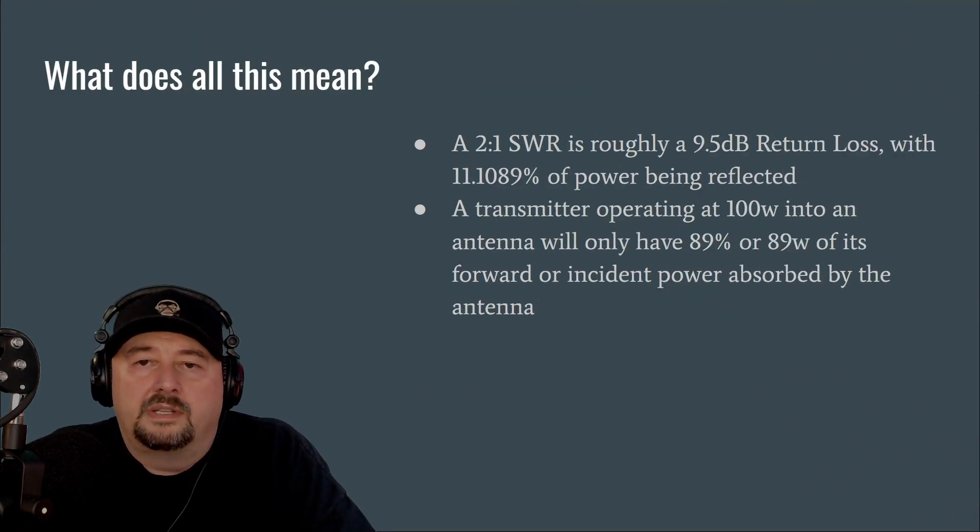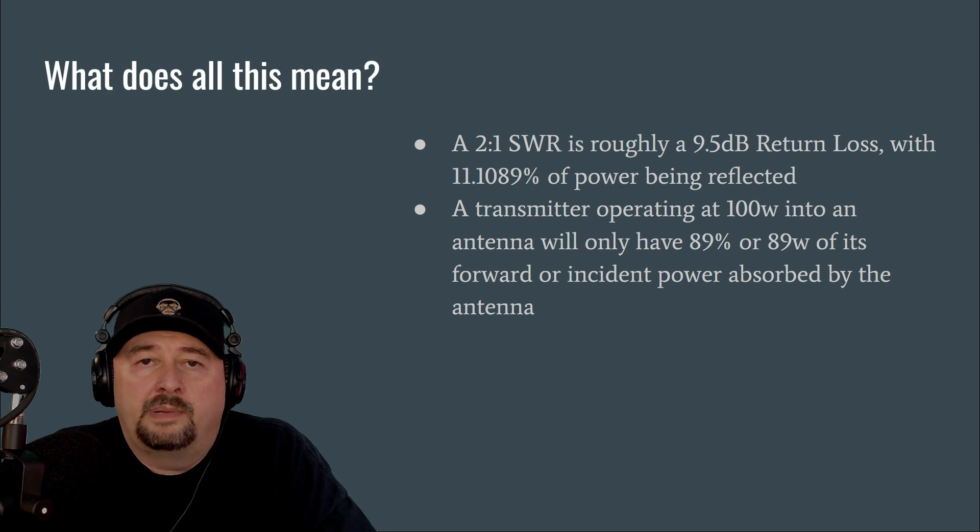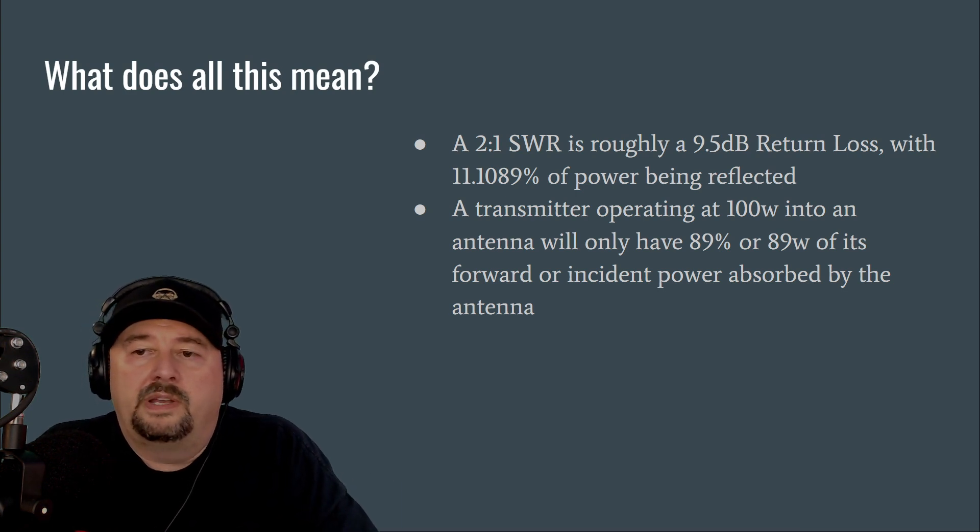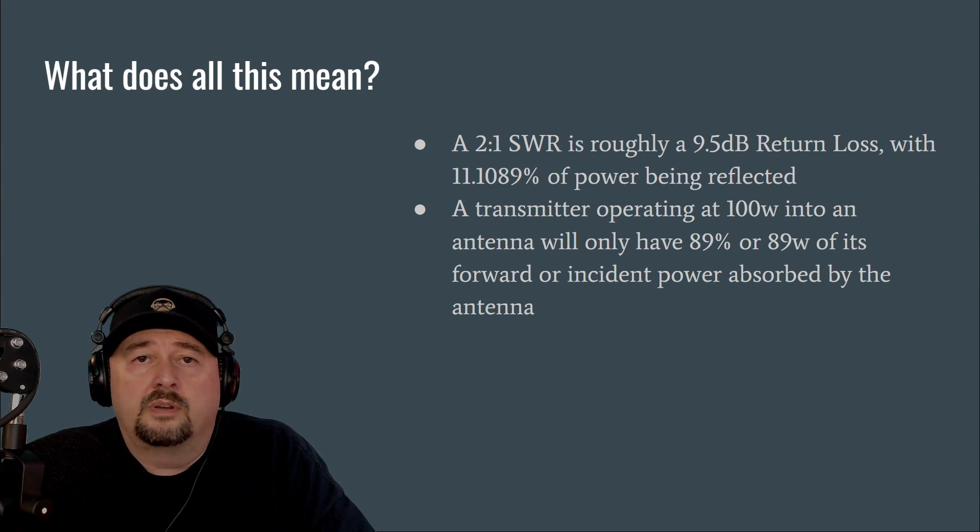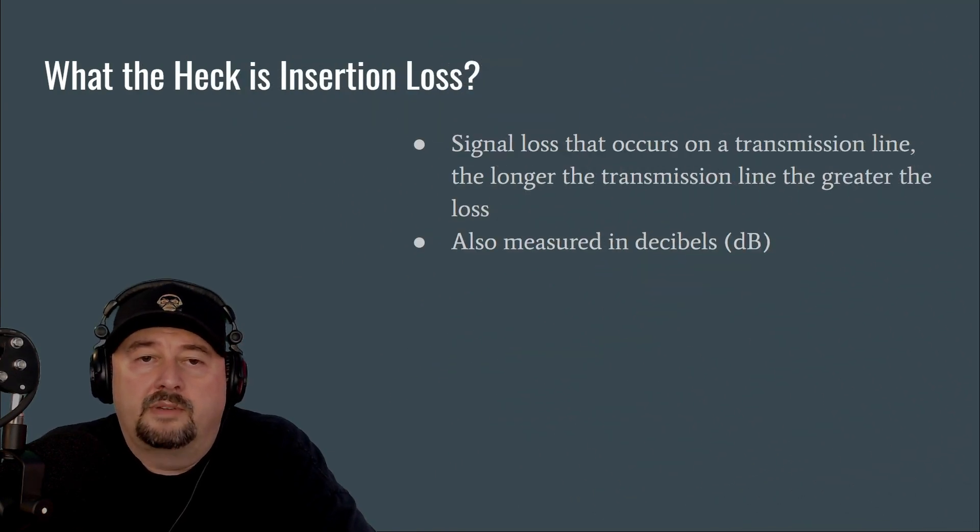So what does all this mean? A 2 to 1 SWR is roughly a 9.5 dB return loss, with about 11% of your power being reflected back towards your source. A transmitter operating at 100 watts into an antenna will only have 89% or 89 watts of its forward or incident power absorbed by the antenna. And this is why ham radio operators are concerned with SWR. We want to maximize our forward power.